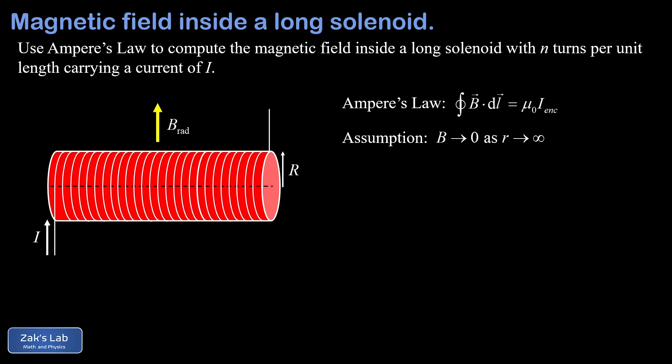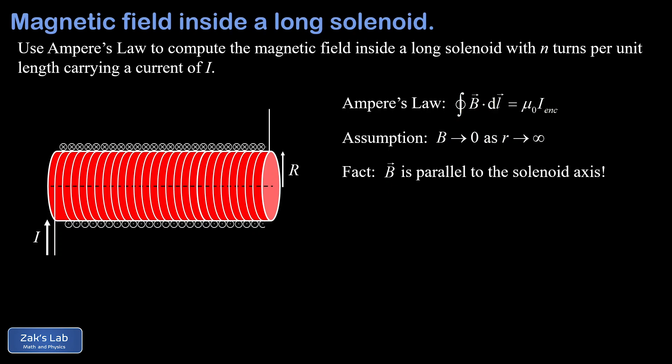Since the magnetic field can't have circumferential or radial components, the only option is that it's parallel to the solenoid axis. To determine which direction it points, we show the wire in cross section by slicing the solenoid along the plane of the page. Current dives into the page along the top of the solenoid and comes out of the page along the bottom. Applying the right-hand rule — thumb in the direction of current, fingers wrapping in the direction of the magnetic field — we get clockwise swirling contributions along the top.